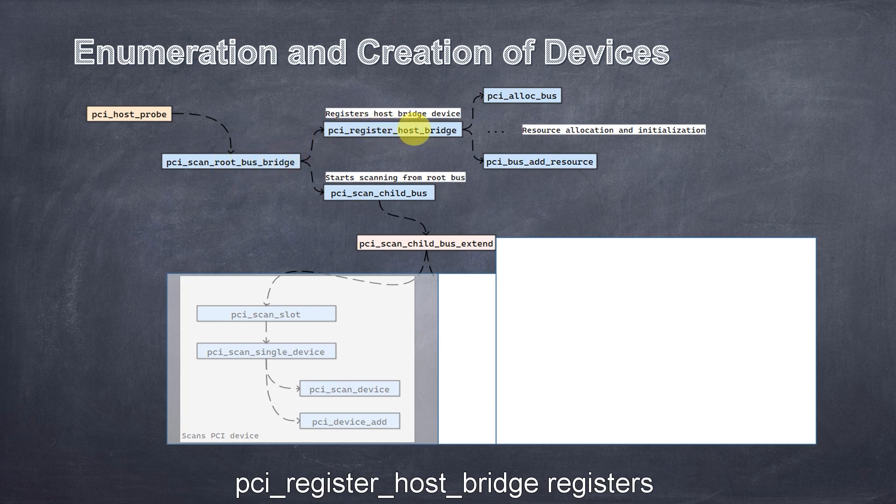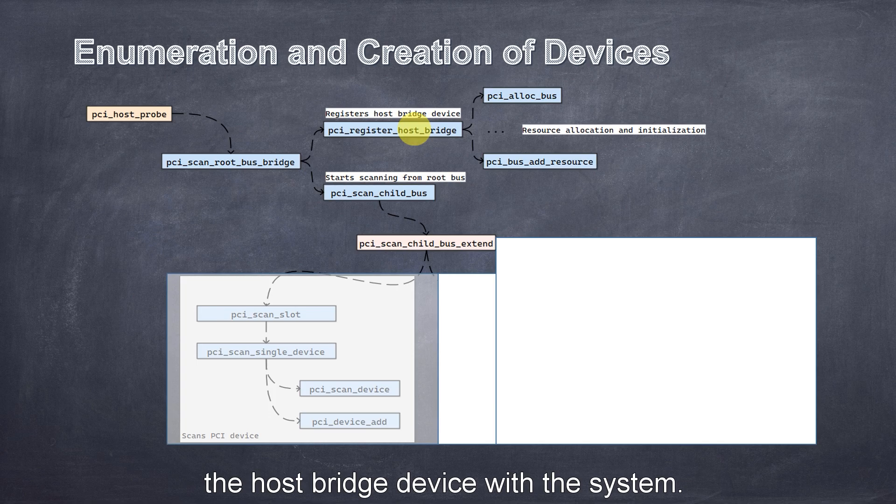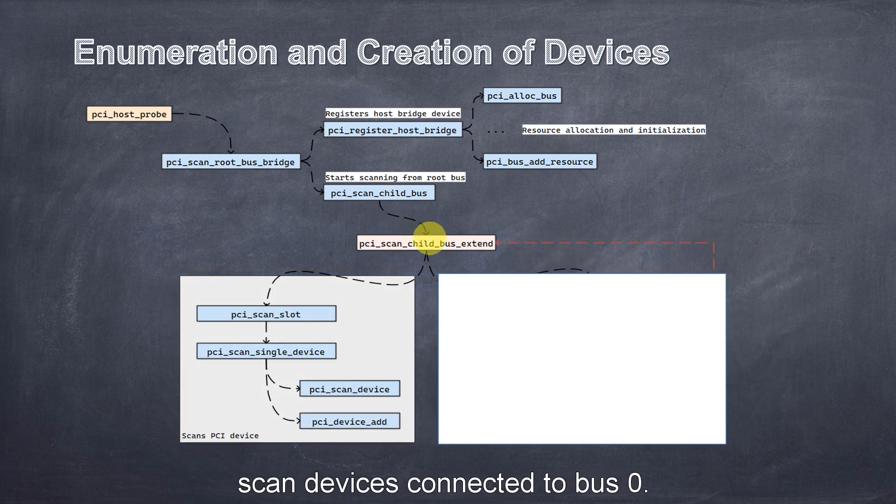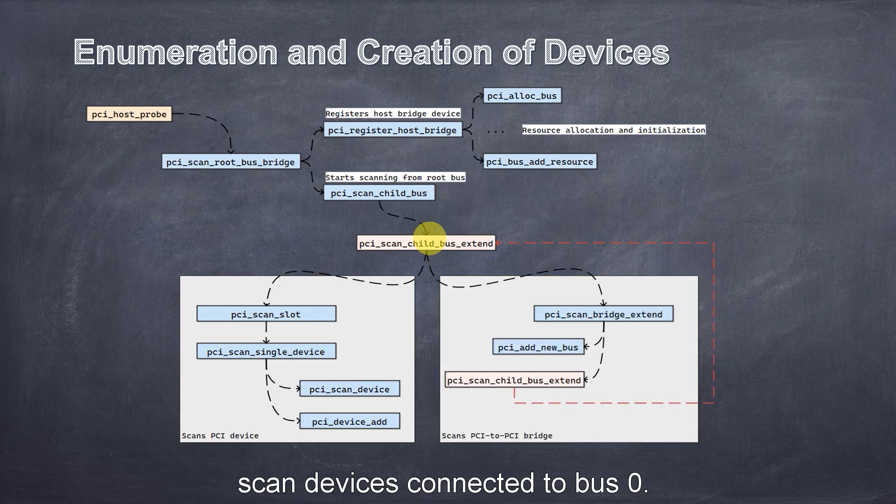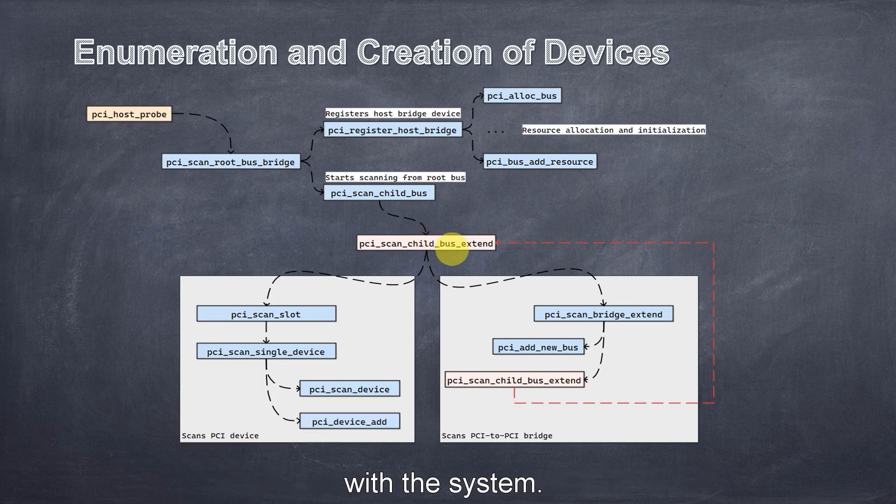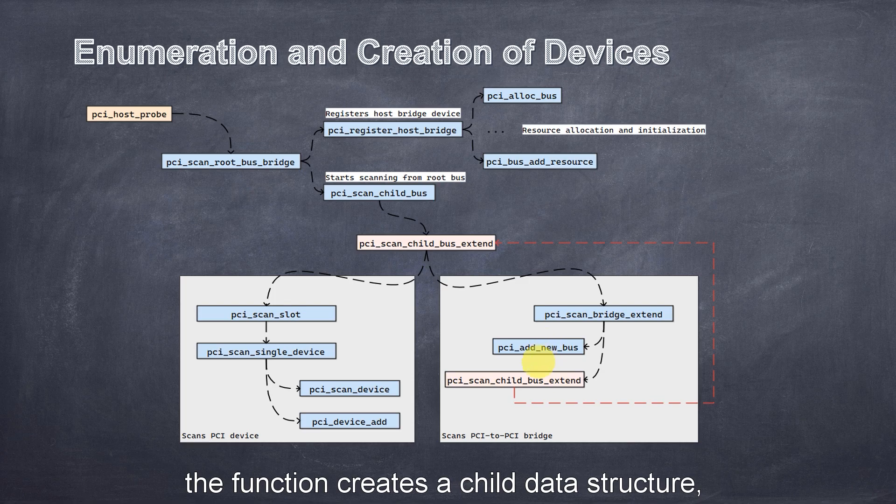The device scanning process starts from pci_scan_root_bus_bridge. pci_register_host_bridge registers the host bridge device with the system. During the registration, root bus is created. Some resource allocation and initialization are also performed. Then, pci_scan_child_bus calls pci_scan_child_bus_extent to scan devices connected to bus 0. This function scans both PCI agent devices and PCI bridge devices.